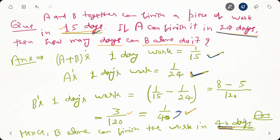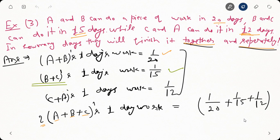Moving to the next question: A and B can do a piece of work in twenty days, B and C can do it in fifteen days, and C and A can do it in twelve days. How many days will they finish it working together, and how much time will each take working separately? A and B's one day work is one by twenty, B and C's one day work is one by fifteen, and C and A's one day work is one by twelve.